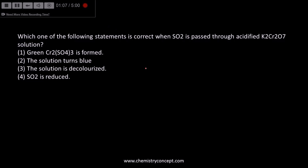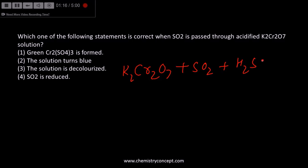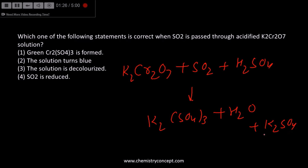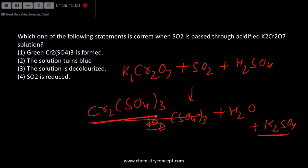The next question is about the reaction of K2Cr2O7 with sulfur dioxide in the presence of sulfuric acid. We get K2SO4, water, and Cr2(SO4)3. The correct statement is option 1: the green-colored Cr2(SO4)3 is formed.